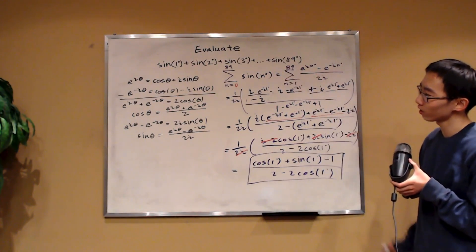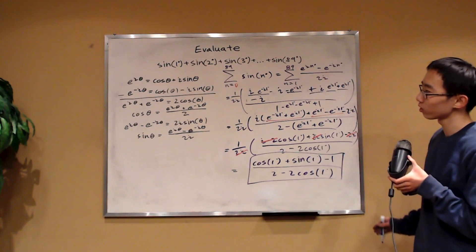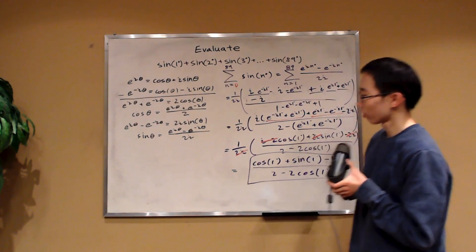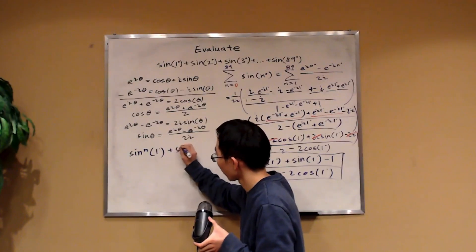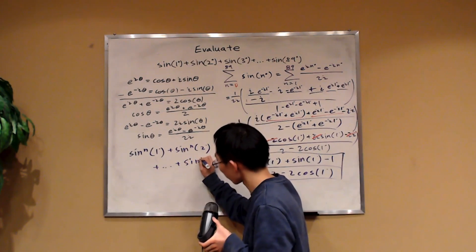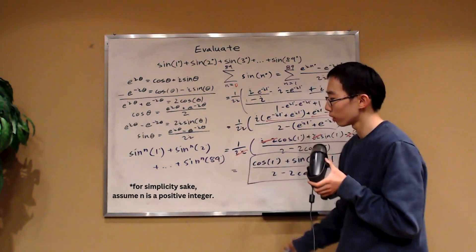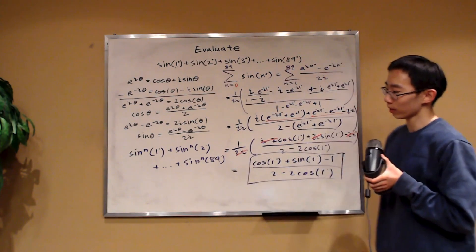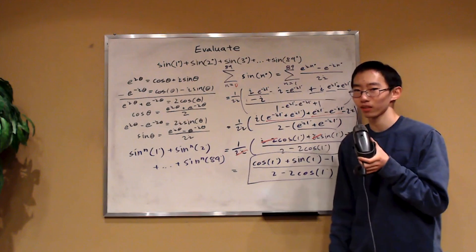This is a pretty good closed form answer. This complex number solution is very powerful and a good way to generalize the sum. For instance, if instead we were dealing with sine to the nth power of 1 degree, plus sine to the nth power of 2 degrees, all the way to sine to the nth power of 89 degrees, could you find a general closed form in terms of n? Using trigonometric identities alone, that would not be easy. Thank you very much for watching — please consider dropping a like and subscribing.